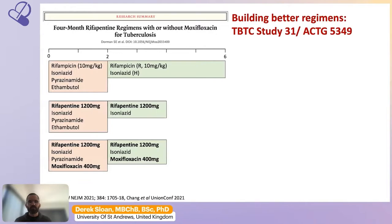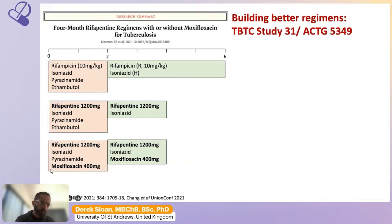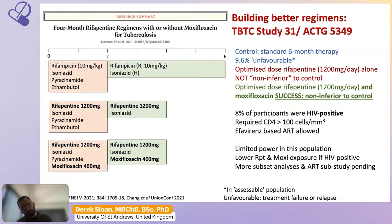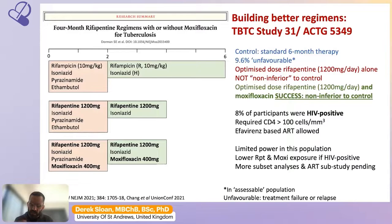The work on rifampicin and rifapentine coalesced into Study 3031, published last year, which compared standard six-month anti-TB chemotherapy to two alternative regimens, one of which used rifapentine at 1,200 mg/day — double the standard dose — with moxifloxacin replacing ethambutol. This regimen achieved successful cure without post-treatment relapse sufficient to be declared non-inferior to standard therapy, showing for the first time in a clinical trial that optimising TB drug doses can allow shorter therapy. However, only 8% of participants were people living with HIV, and there were restrictions on ART regimens and CD4 count thresholds for recruitment.